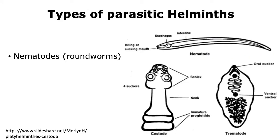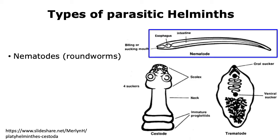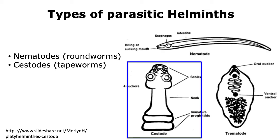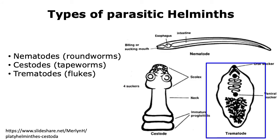There are different types of parasitic helminths, and they can be classified into three main groups: the nematodes, or roundworms; the cestodes, also called tapeworms; and the trematodes, also called flukes.